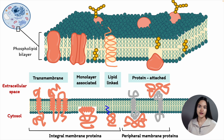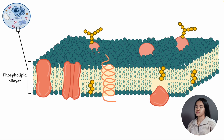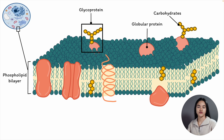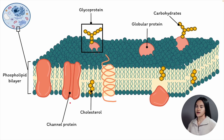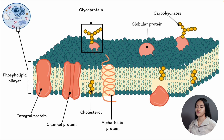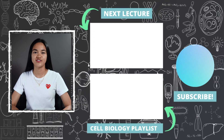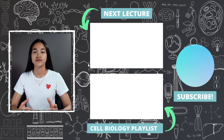Before ending this lecture, let's label the key structures. We have globular proteins, glycoproteins (proteins with carbohydrates covalently attached to them), cholesterol which influences membrane fluidity, a channel protein which moves specific molecules across the lipid bilayer, an alpha helix protein bound to the lipid bilayer, and a peripheral protein — recall that peripheral proteins are not embedded in the lipid bilayer. Thank you for watching. Make sure you subscribe to EKG Science so you don't miss a single lecture, and remember: subtract complexity and slow down to study.